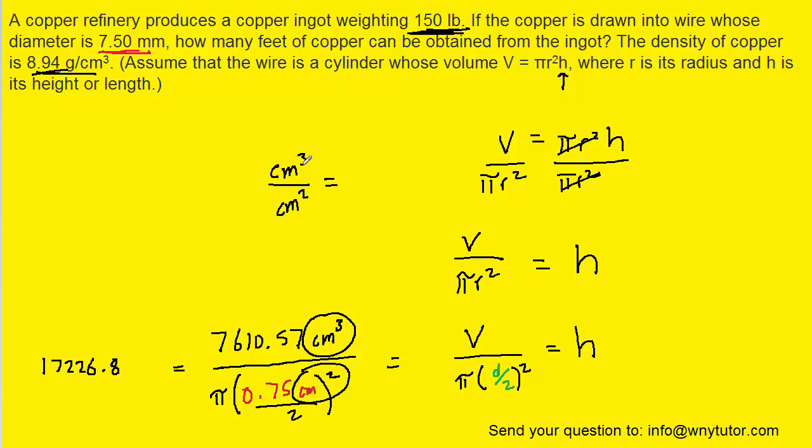And when we divide, the exponents subtract. So 3 minus 2 is 1. You end up with centimeters to the first power, which of course is just centimeters. So this is the answer in centimeters, but of course we're not done because the question wanted the number of feet of copper. So now we've got to change the centimeters into feet.